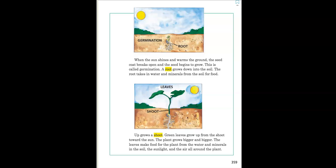A root grows down into the soil. The root takes in water and minerals from the soil for food. Up grows a shoot. Green leaves grow up from the shoot toward the sun. The plant grows bigger and bigger.